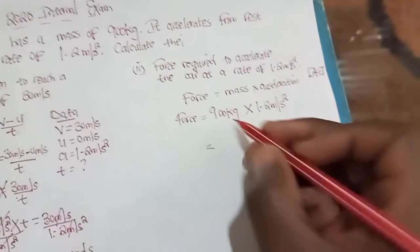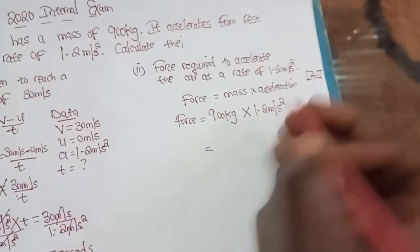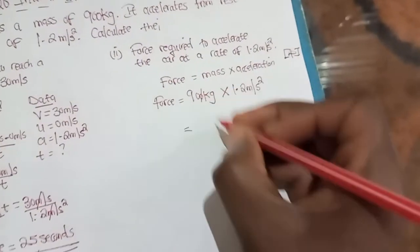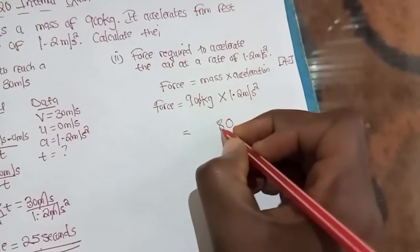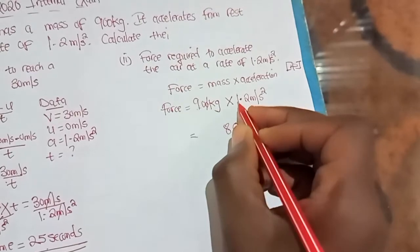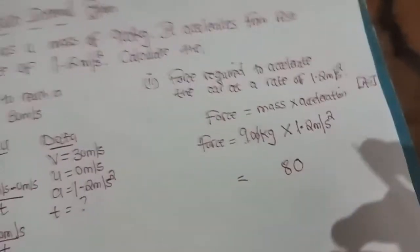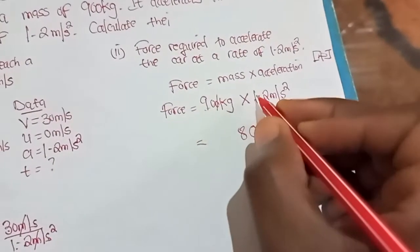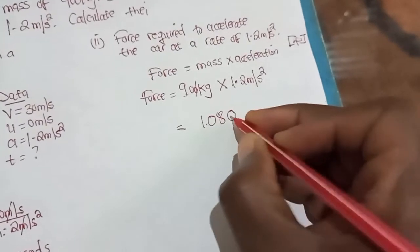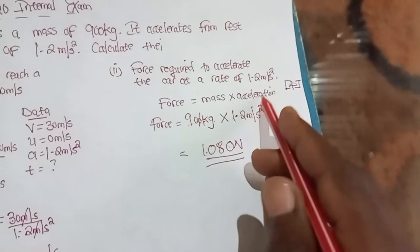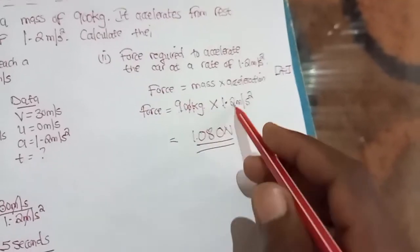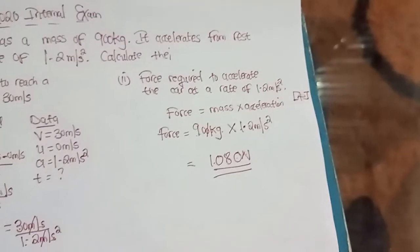So 900 multiplied by 1.2: we can remove the decimal by canceling the zero, giving 9 times 12. 9 times 2 is 18 — write 8, carry 1. 9 times 1 is 9, plus 1 gives 10. So the result is 1080. Force is always given in newtons, so this is the correct answer. Force equals mass multiplied by acceleration: substituting 900 kg and 1.2 m per second squared gives 1080 newtons. I hope you find this video very beneficial.